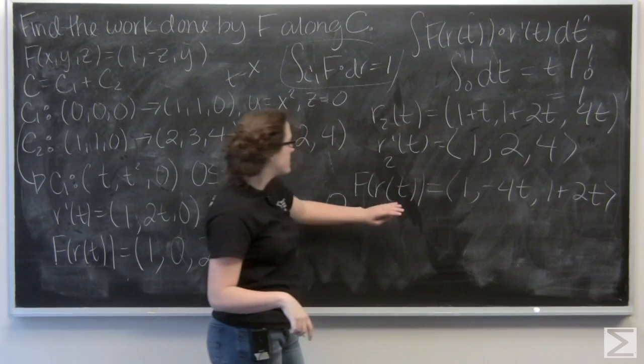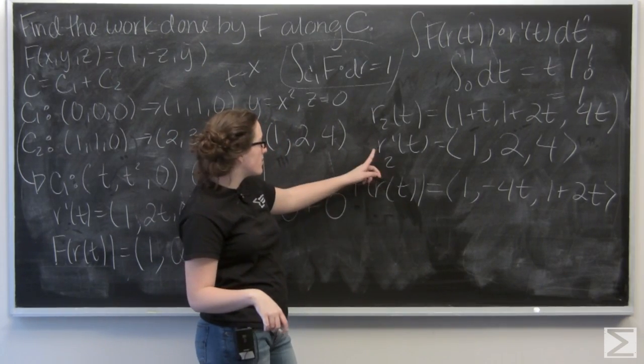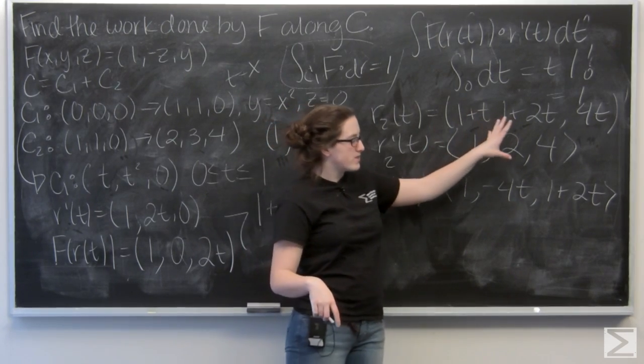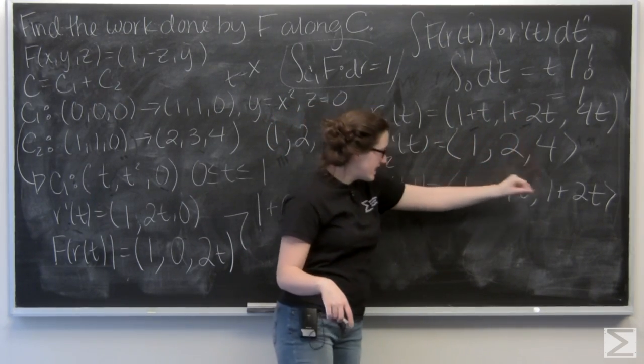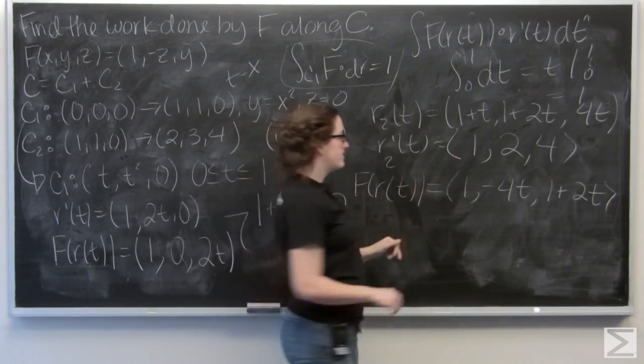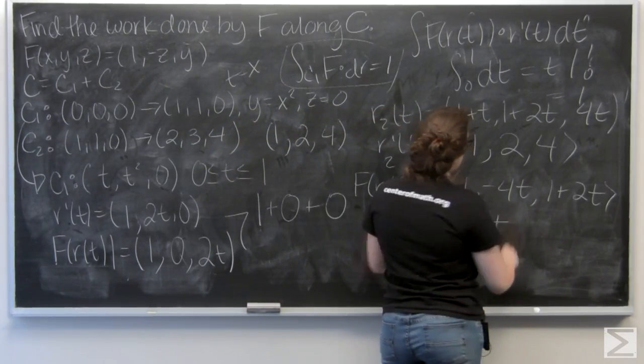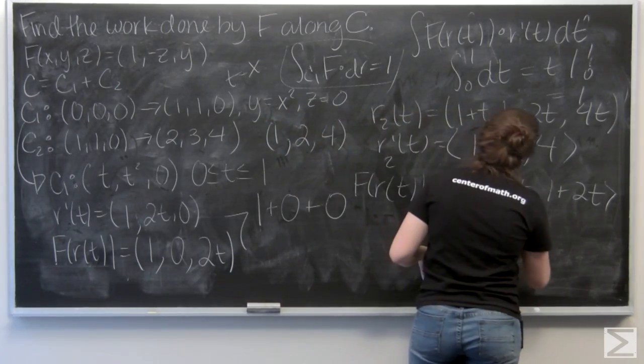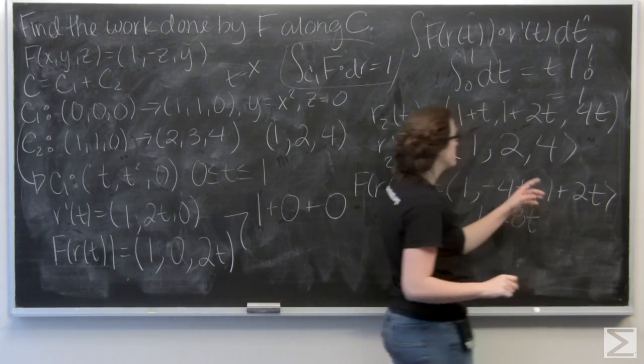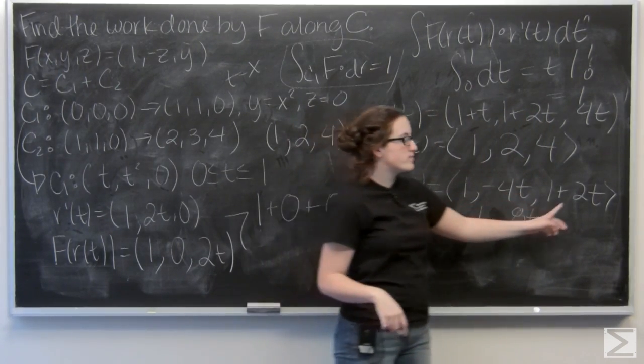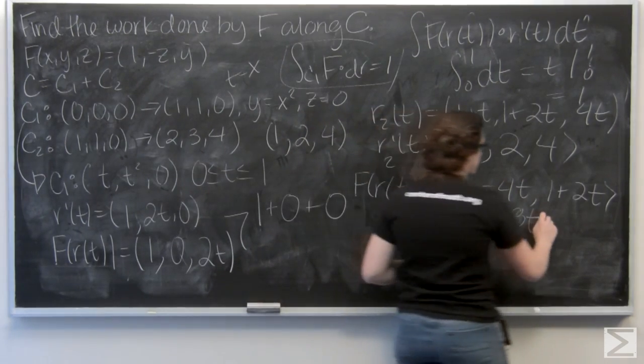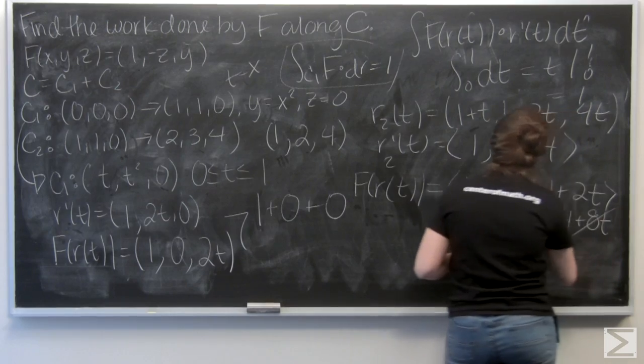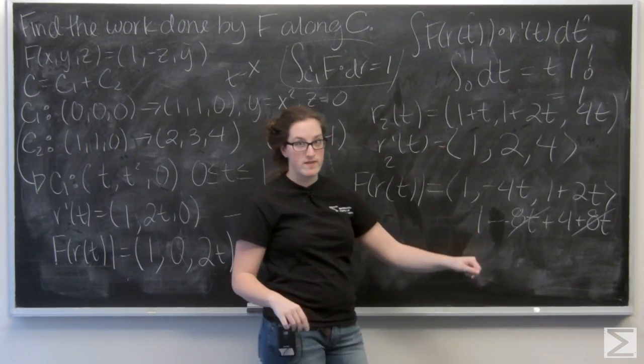Now, let's find the dot product of f of r of t and r prime of t. So, we know the drill, right? Product of the i's plus product of the j's plus product of the k's. So, 1 times 1 is 1. 2 times negative 4t is negative 8t. And 4 times quantity (1 plus 2t) is 4 plus 8t. Well, my 8's cancel out, and I'm left with 5.